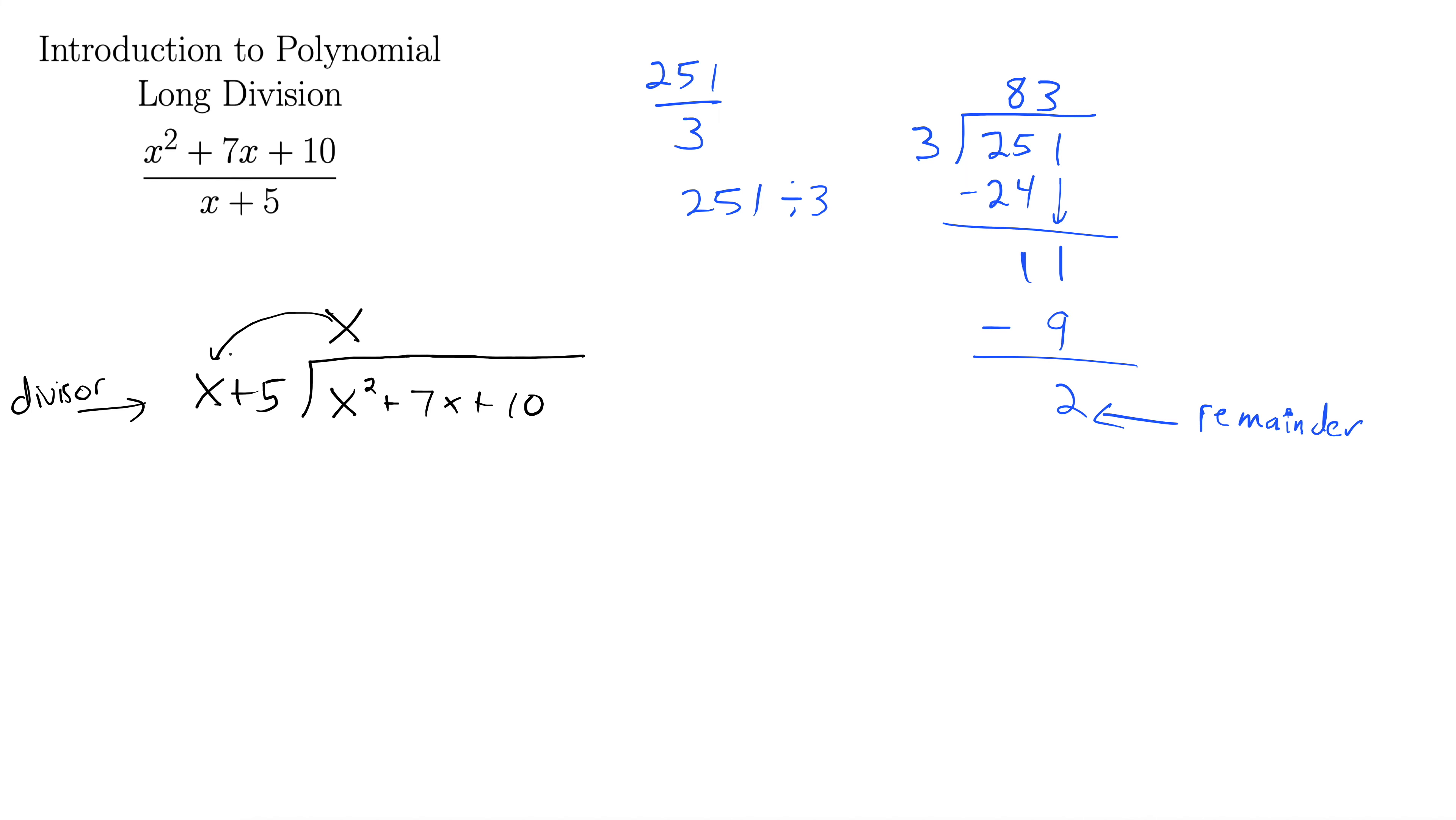Then we multiply through here to both these terms, and we put it under, directly under. And your first term should always cancel. So we have x times x is x squared. x times 5 plus 5x, and then you subtract.